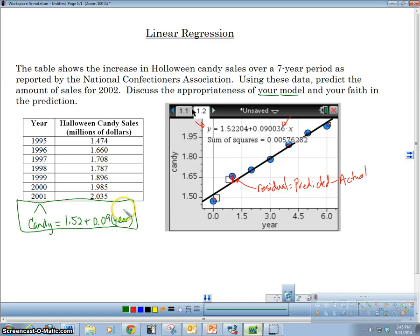All right. So what we're going to do is we're going to use this model to predict what the sales were in 2002. So what we're going to do is 2001 was, I believe we said that was year six. So we're going to go and plug in year seven. So we're going to go and plug in year seven in here. So we'll do that. We'll go 1.52 plus 0.09 times seven. That's going to give us our candy. And so we're going to just figure that out in our calculator here. Okay. So I got 2.95, 2.95 million dollars of candy sold in year seven, which is in 2002.